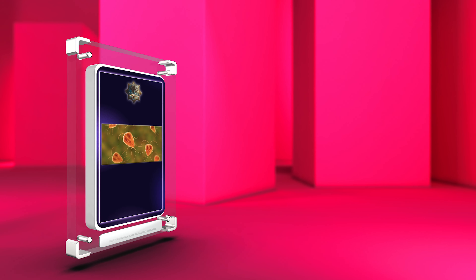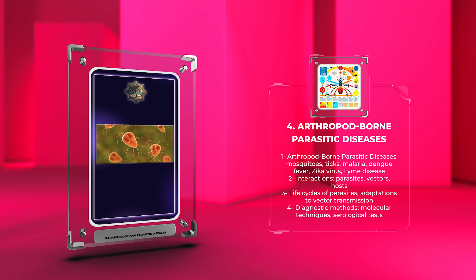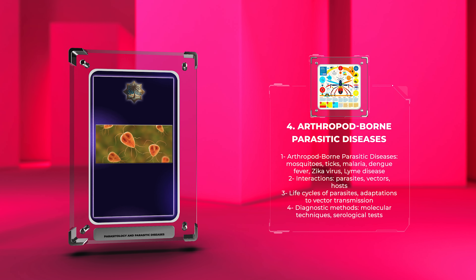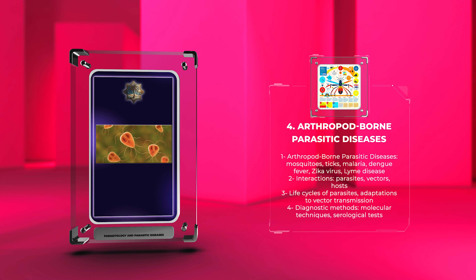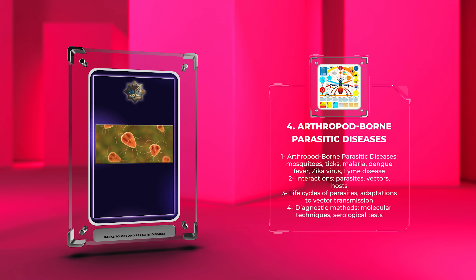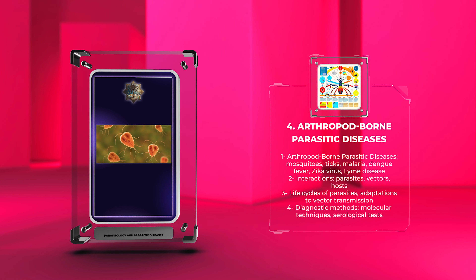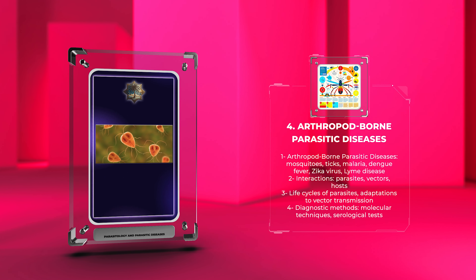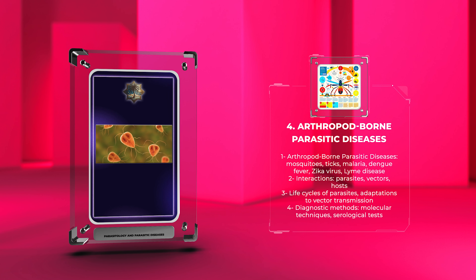Arthropod-borne parasitic diseases. This topic will delve into the fascinating world of diseases transmitted by arthropods, such as mosquitoes and ticks. Examples include malaria, transmitted by Anopheles mosquitoes, dengue fever, Zika virus, and Lyme disease, transmitted by ticks. We will explore the complex interactions between parasites, vectors, and hosts in the context of these diseases. The life cycles of the parasites and their adaptations to vector transmission will be discussed.